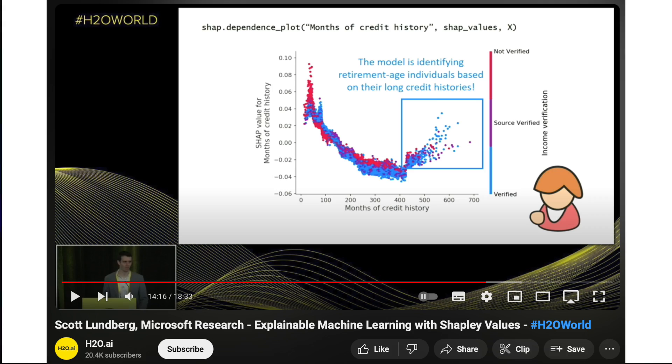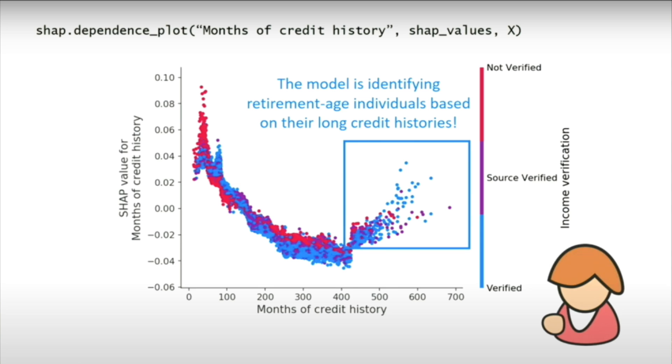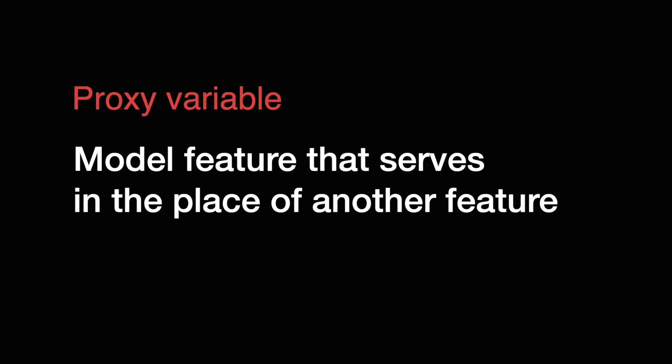Debugging is not only about making predictions correctly — it also means ensuring that they are made ethically. Scott Lundberg, the creator of SHAP, discusses an example in a presentation (linked in the description). Using SHAP, he interprets a model used to predict credit default. He shows that the model is using months of credit history to make predictions, where a longer history is associated with a higher risk of default. The problem is that this feature is a proxy for age, which is a protected variable. A proxy variable is a model feature that serves in the place of another feature. Understanding why this is a problem requires considering two layers of proxy variables.